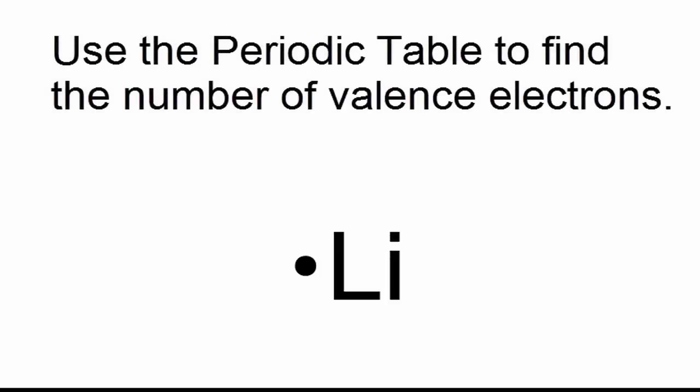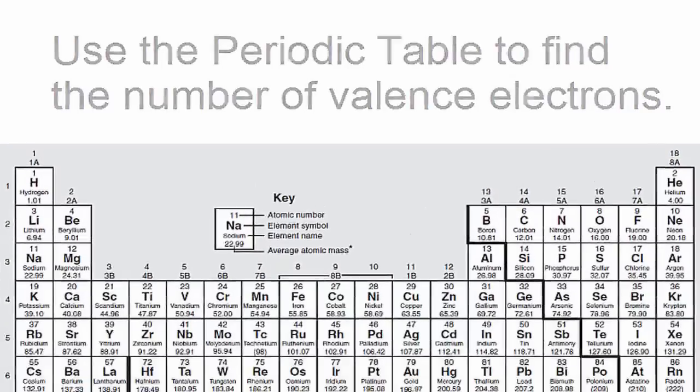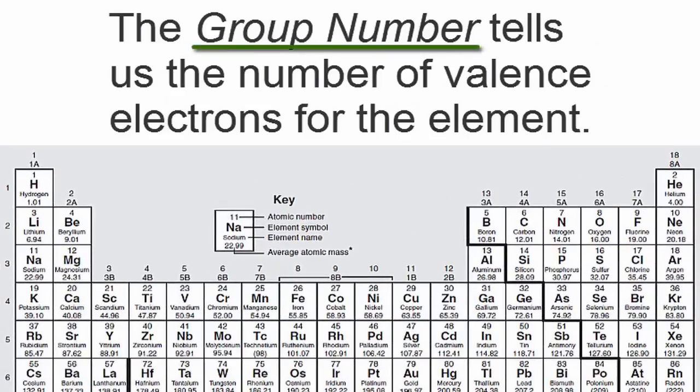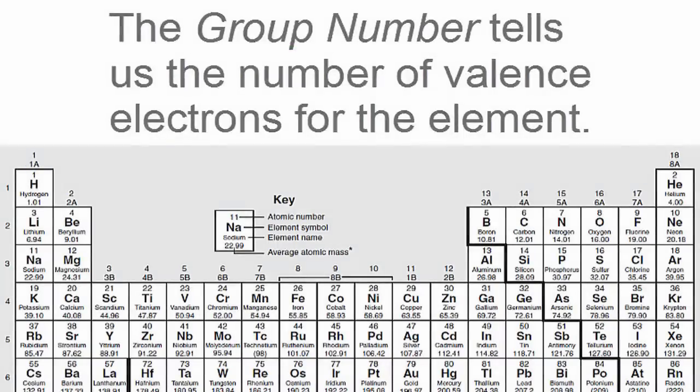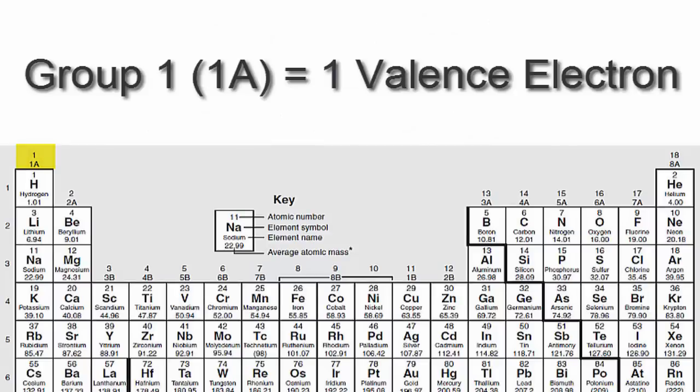We can find the number of valence electrons using the periodic table. The group number tells us the number of valence electrons for the element. For example, hydrogen has one valence electron because it's in group 1, sometimes called 1A.